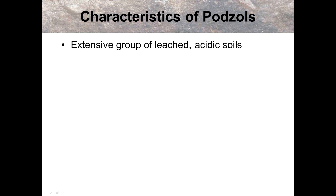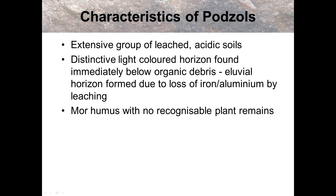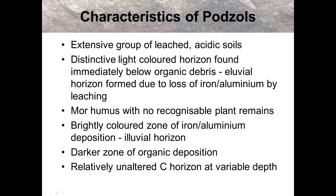Basically, it's an extensive group of leached acidic soils. There's a distinctive light-coloured horizon found immediately below the organic debris — so basically below your pine needles. Some more humus, with no recognisable plant remains, due to a distinct lack of plants being there in the first place. Then a belly-coloured zone of iron and aluminium deposition, which links into your iron pan just below that — a darker zone of organic deposition — and basically the C horizon is your parent material at the bottom, which remains kind of untouched.